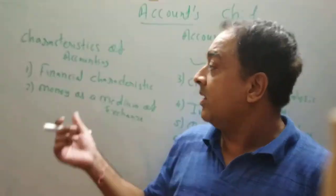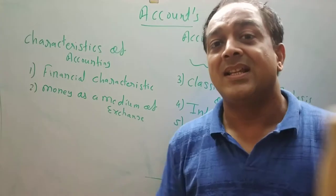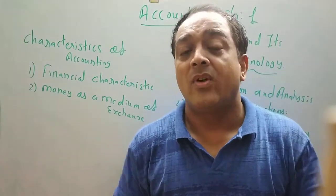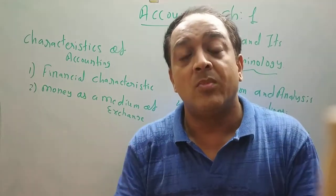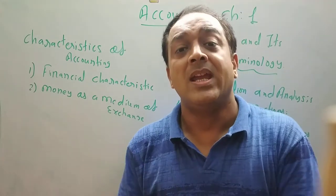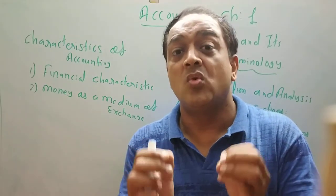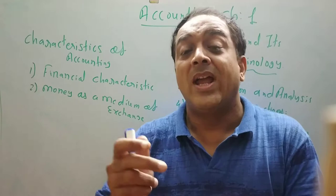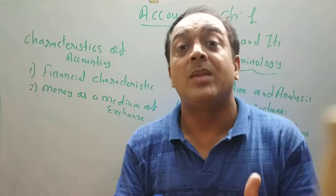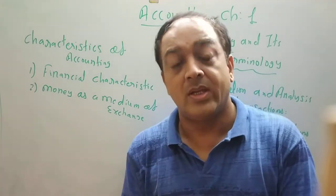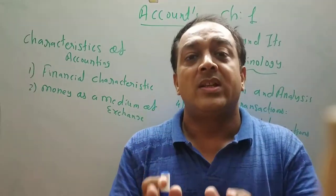Second point is money as a medium of exchange. In business, when we sold goods or purchase goods, the medium of exchange must be money. For example, purchase goods of rupees 5,000 — it may be purchased on cash or on credit. Both transactions are recorded, but in books of accounts, financial characteristics are recorded.